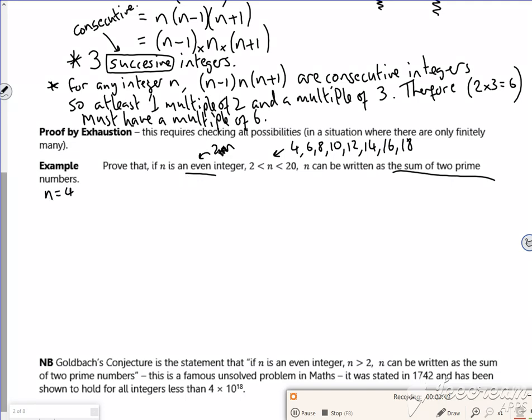So for n equals 4, that could be 2 plus 2, so that's okay. n equals 6 could be 3 plus 3, because 1's not prime.